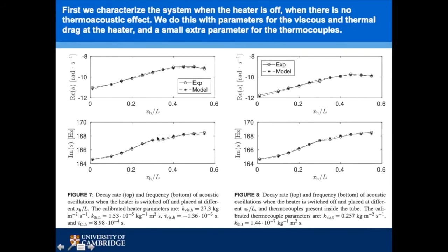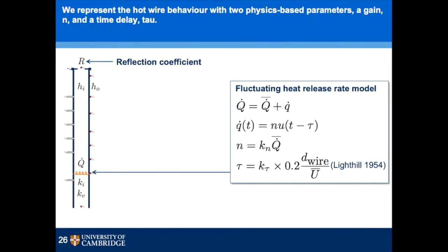In our third set of experiments we put thermocouples inside the tube; the right-hand side results show that adding thermocouples barely changes the frequency but increases the decay rate, shifting that line down slightly. This is simply due to the thermo-viscous mechanism at the thermocouples themselves. We add one extra parameter, k_thermal for the thermocouples, linked proportionally to k_thermal of the heater, and can fit the results very nicely. For the cold flow case this is essentially least-squares fitting and is quite simple.